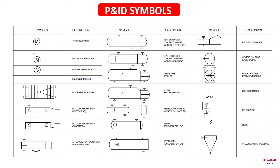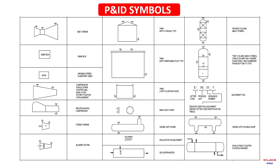Heat exchanger cooler condenser with floating head, reboiler, shell and tube heat exchanger, pump vessel, basic simple vessel, vessel with removable dish end, vessel with removable flat end. Centrifugal pump basic simple, rotary positive displacement pump, propeller mixer, flame cyclone or hydrocyclone. Gas turbine, variable speed gear, compressor, centrifugal, rotary positive displacement, tank with spray heating. Steam turbine fan, tank with conical top, tank with removable flat top, tank with floating roof, manhole cover, vessel with drum installation on equipment.